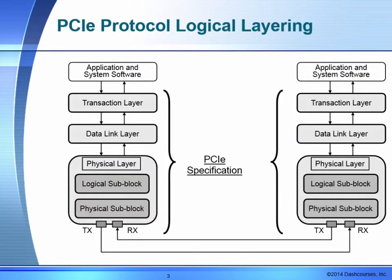Taking a look again at the PCI Express protocol logical layer mapping — this should start becoming familiar. At the top we have the transaction layer, which communicates with the application and system software. When an application makes a request for data from a device at the other end of a PCI Express link, that request is passed to the transaction layer, then to the data link layer, then to the physical layer where it does the logical sub-block, scrambling, and 8B/10B encoding for transmission. The reverse is done at the other side — it strips off the added encoding packets and passes it back to the transaction layer and application software.